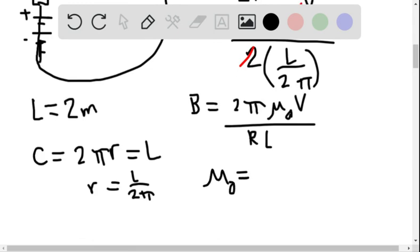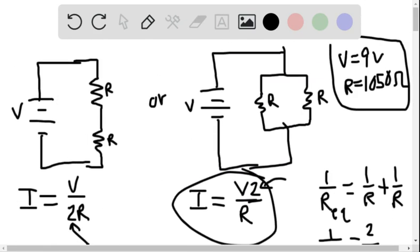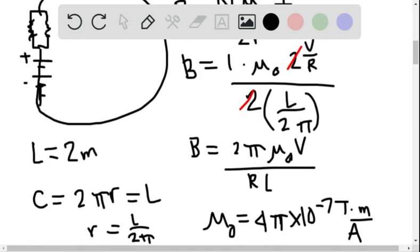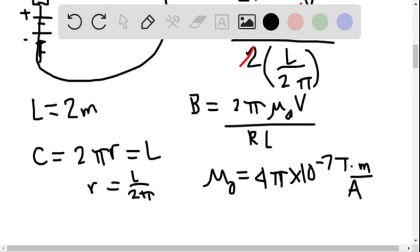Mu zero is 4 pi times 10 to the negative 7th tesla meters over amps. Okay, so let's put this into an equation. 2 pi times 10 to the negative 7th power V, which is 9 volts over RL. R we wrote above was 1050 ohms. L is 2.